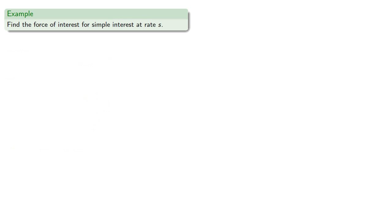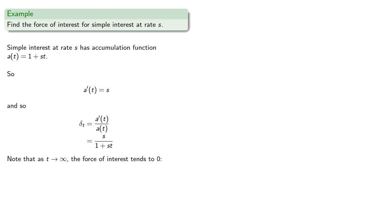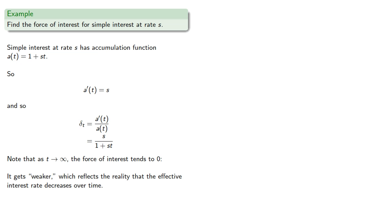What about simple interest? Simple interest at rate s has accumulation function a(t) equal to 1 + s*t. The derivative is s, and so delta(t) will be s divided by (1 + s*t). Notice that as t goes to infinity, this force of interest tends to zero. This reflects the reality that the effective rate does decrease over time — the force of interest gets weaker.